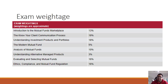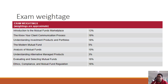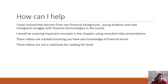Here is the exam weight breakdown: Introduction to the Mutual Fund Marketplace 13%, Know Your Client and Communication Process 19%, Introduction to Investment Products and Portfolios 18%, the Modern Mutual Fund Industry (including ETFs) 5%, Analysis of Mutual Funds 10%, Understanding Alternatively Managed Products 3%, Evaluating and Selecting Mutual Funds 16%, and Ethics, Compliance, and Mutual Fund Regulations 16%.